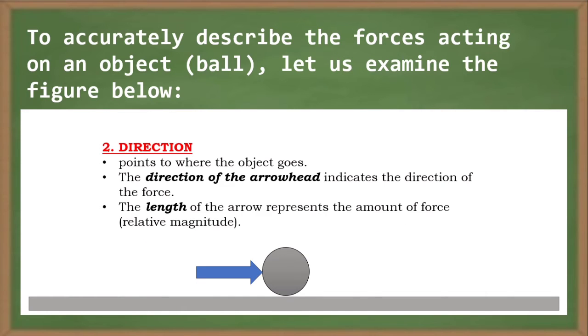The next word is direction. It is the point to where the object goes. The direction of the arrowhead indicates the direction of the force. The length of the arrow represents the amount of force or the relative magnitude.